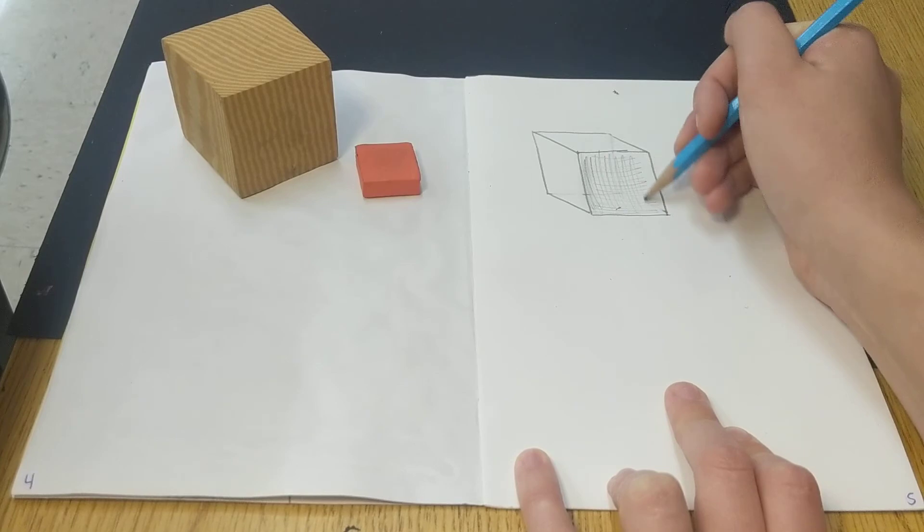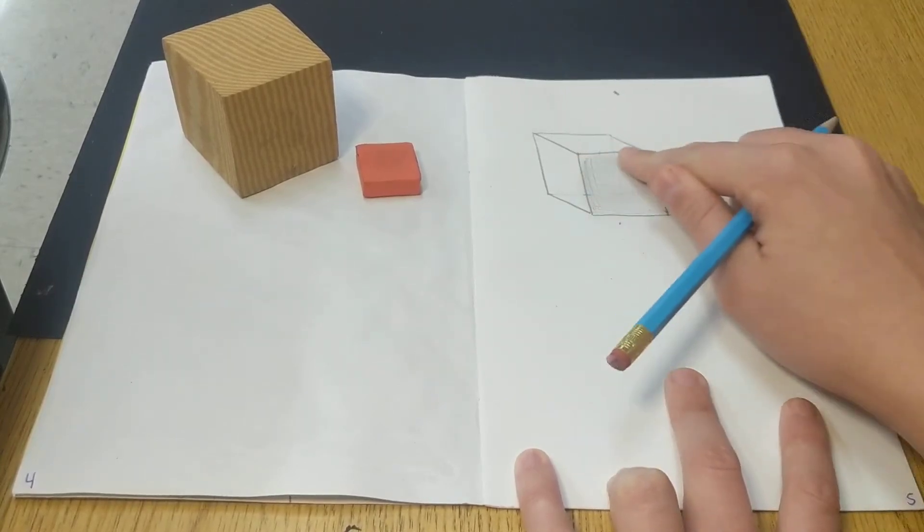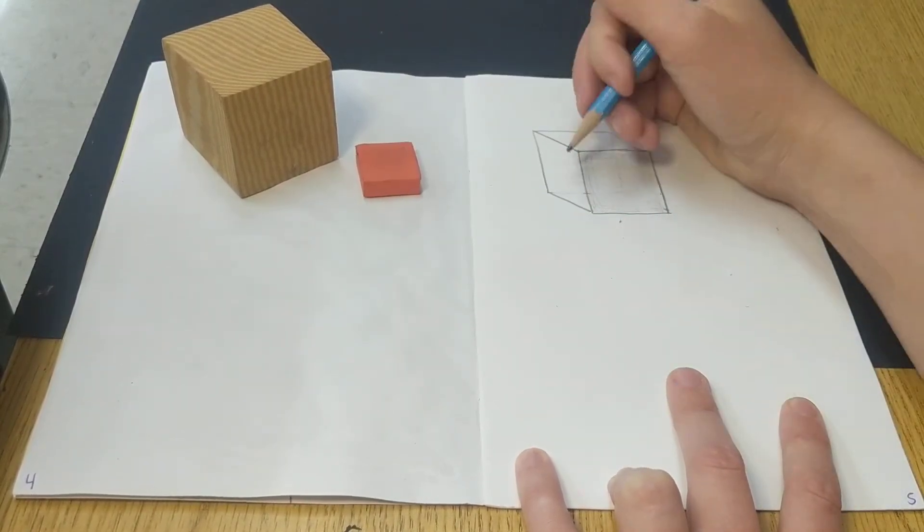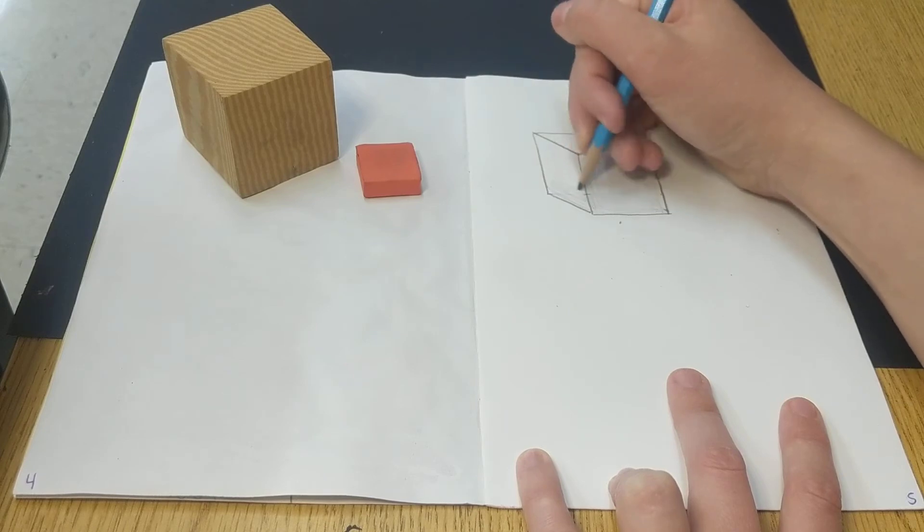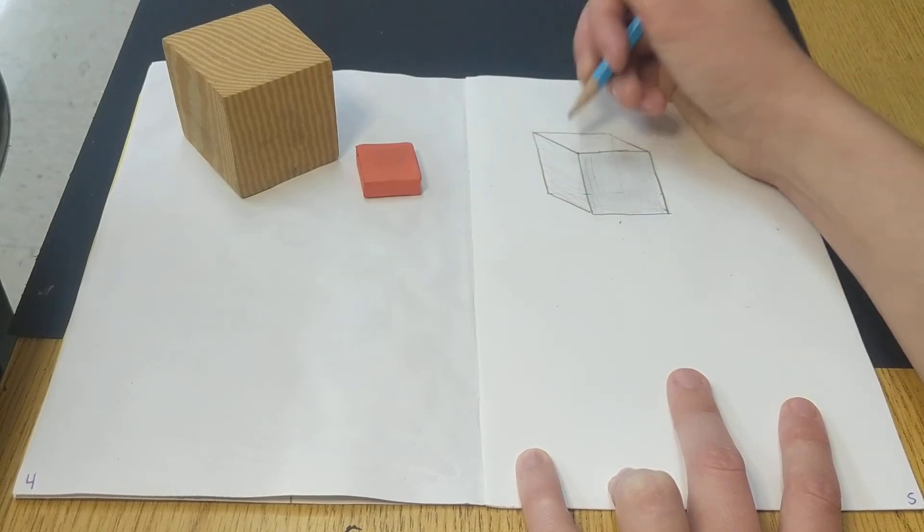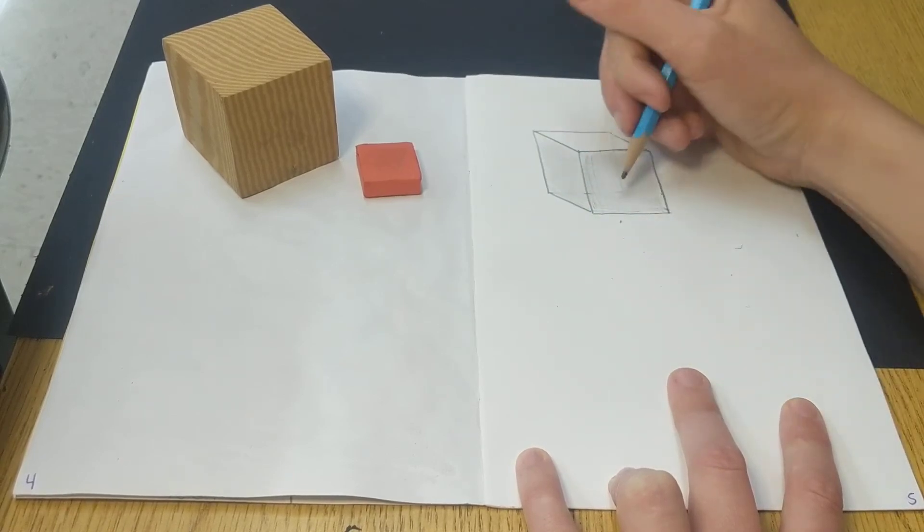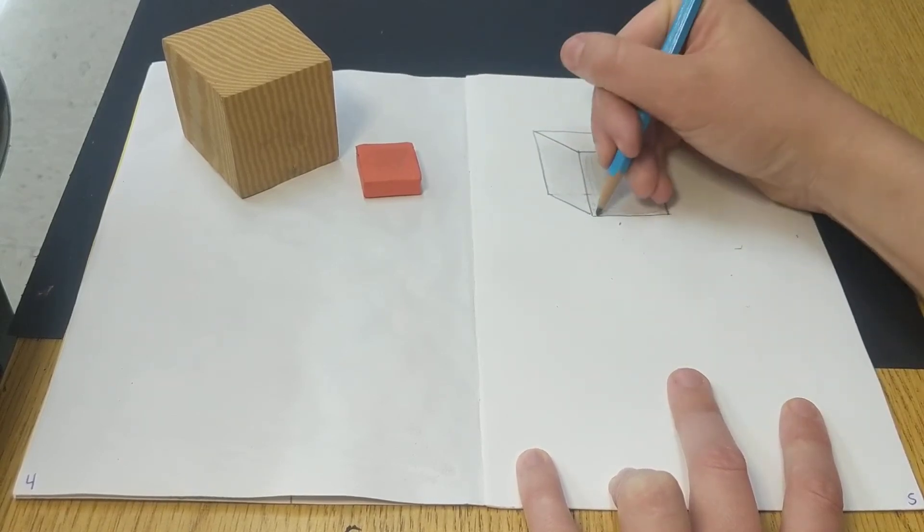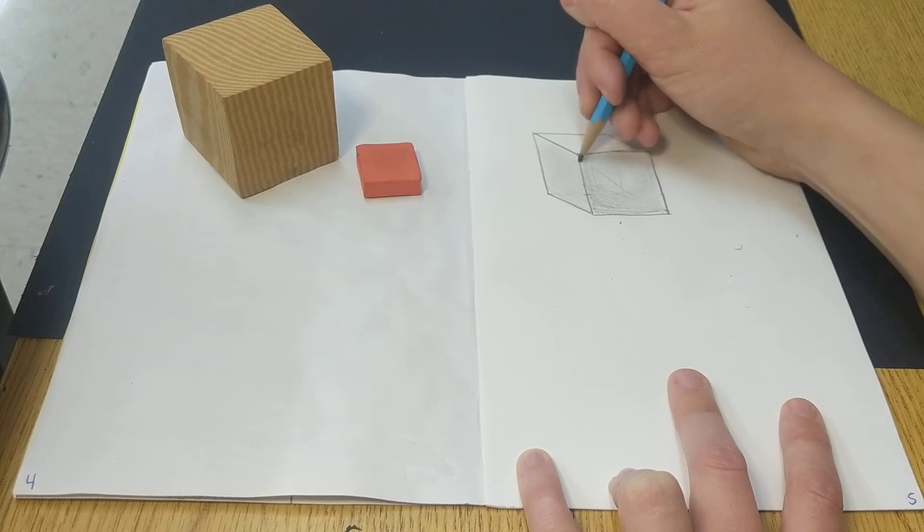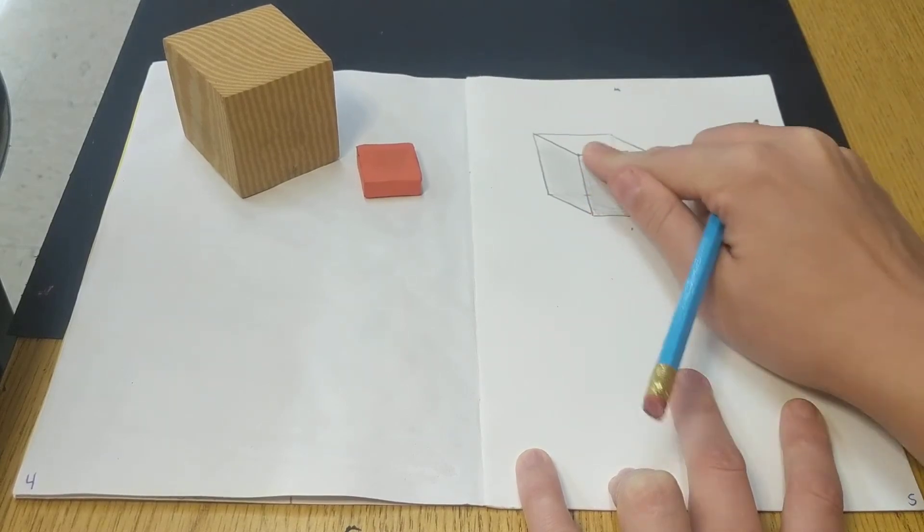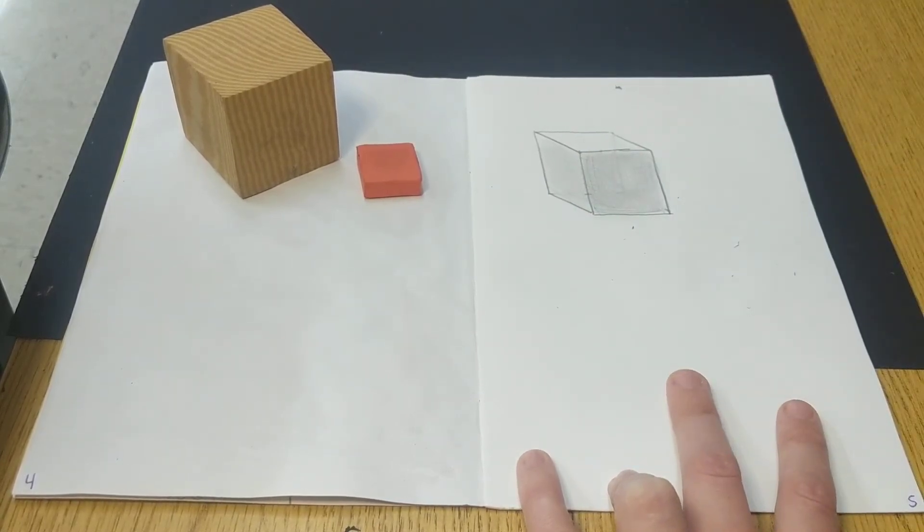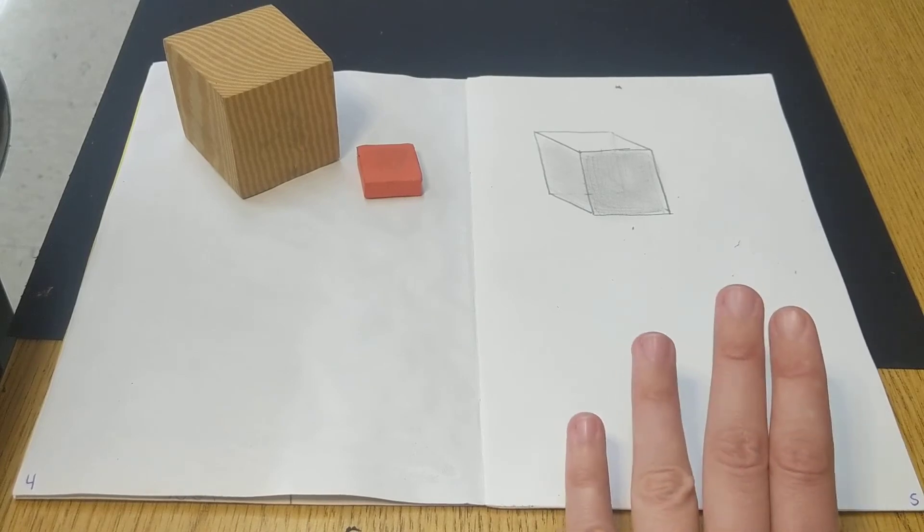So I know that this face of my cube is darker because it's not being hit by the light. Same with this side. I'm kind of lightly making marks with my pencil and then blending them together with my finger. You can give this a try. You can always color it a different way. I want you to kind of experiment today and see what works for you.